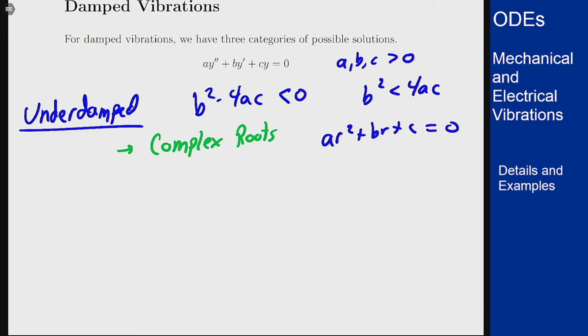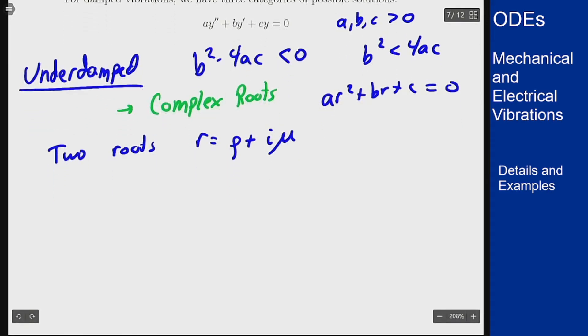So in that case we will get two roots r = ρ ± iμ where based on the quadratic formula ρ is -b/2 and μ is √(4ac - b²)/2. But since that's negative what I get when I pull the i out is flipping this around.